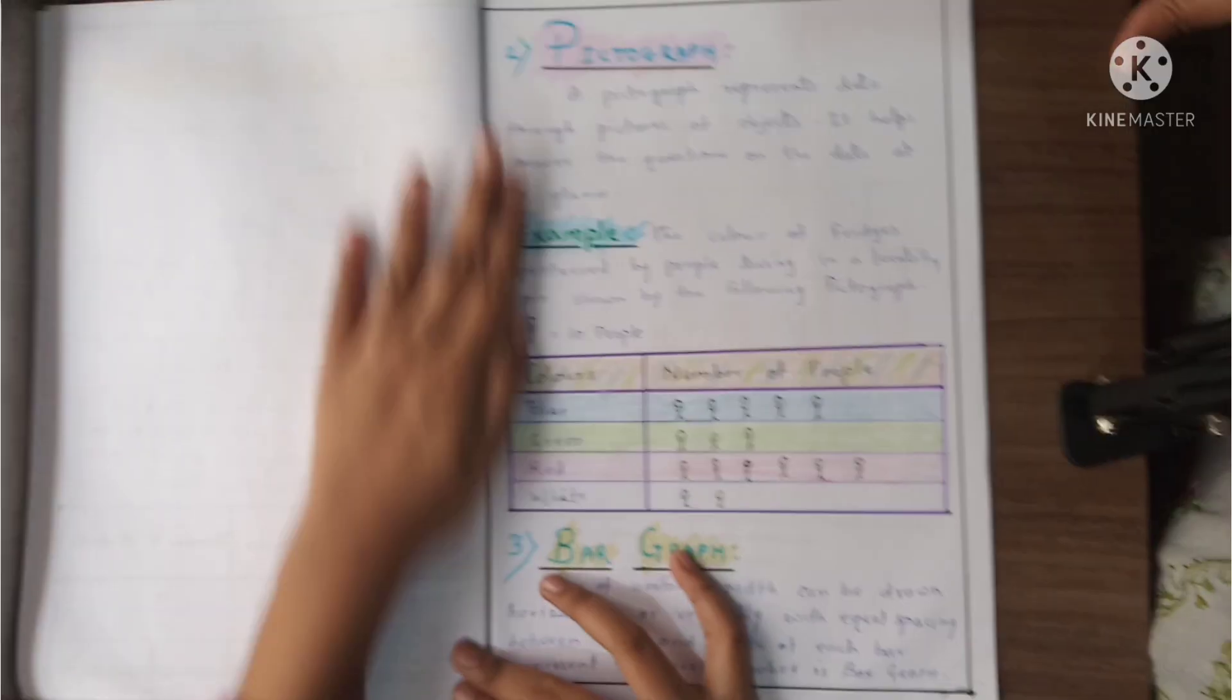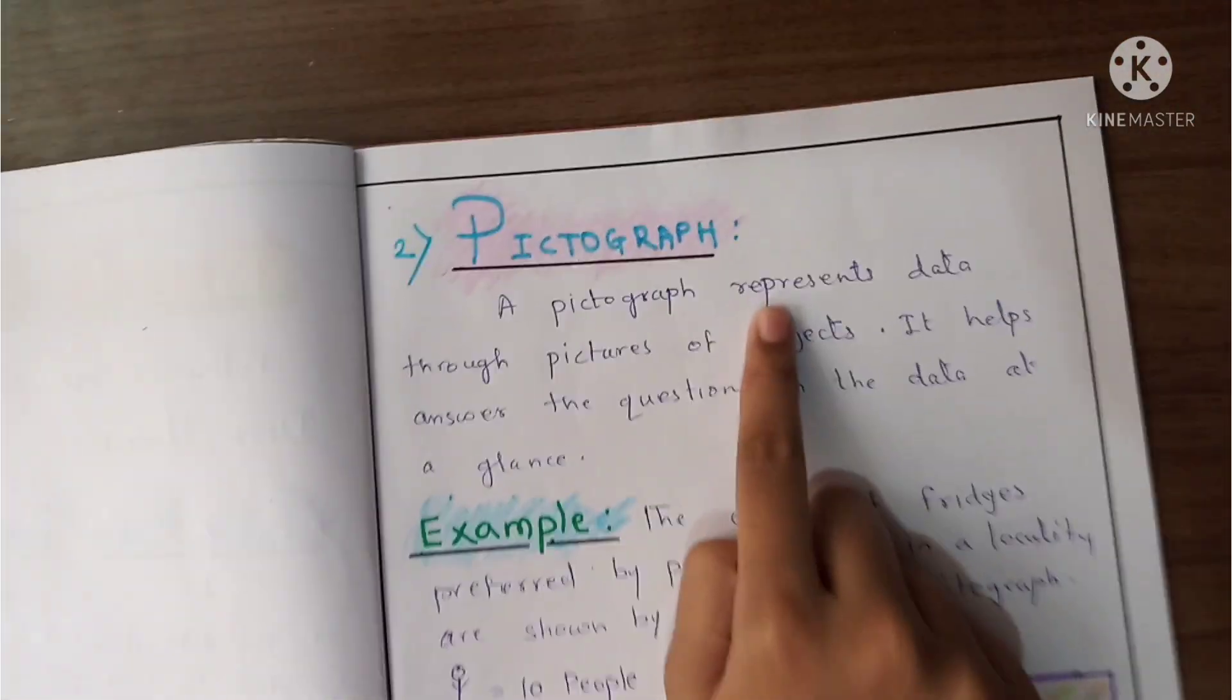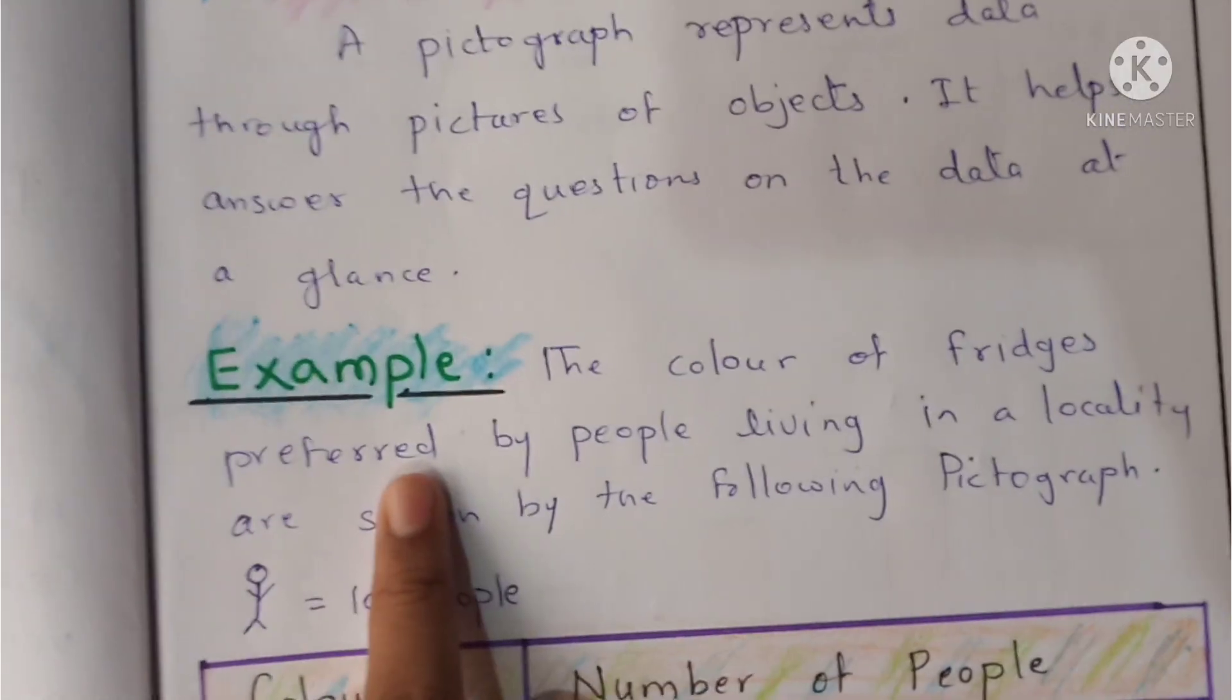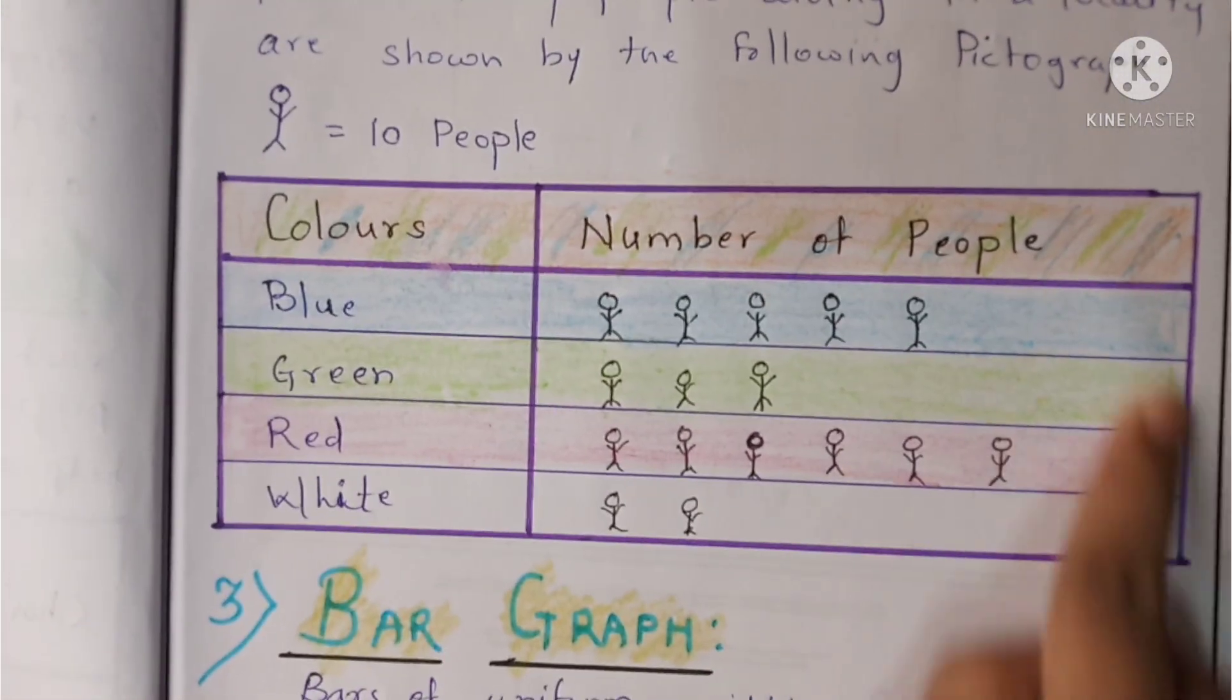And the next is the pictograph. Here is the graph, here is the information. Here is the example. Here is the table of pictograph.